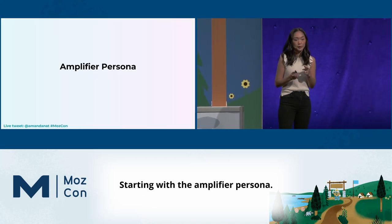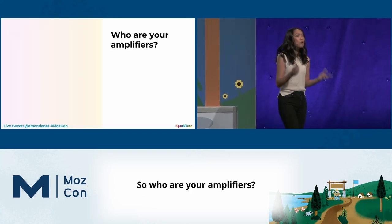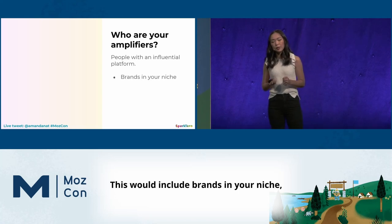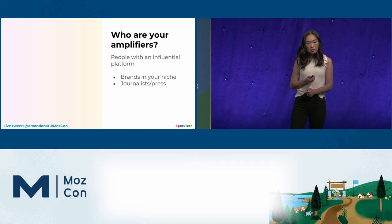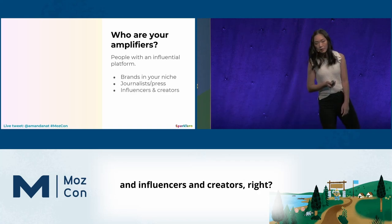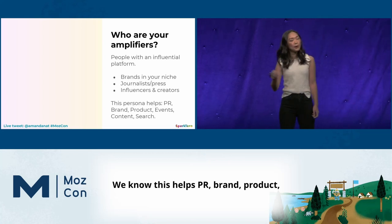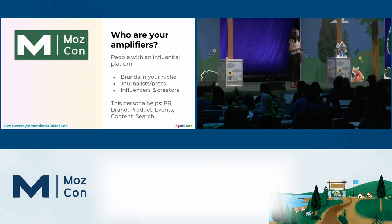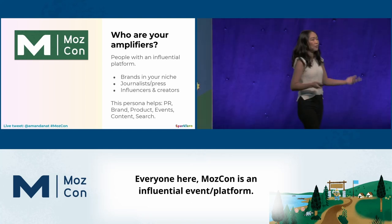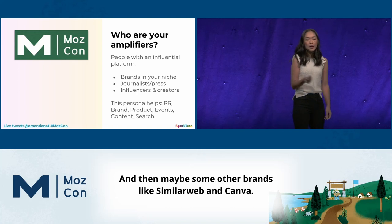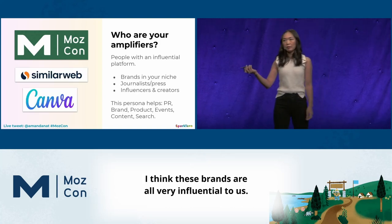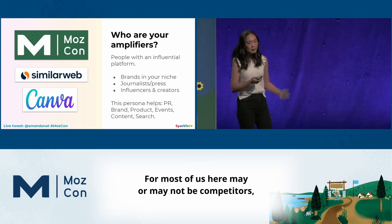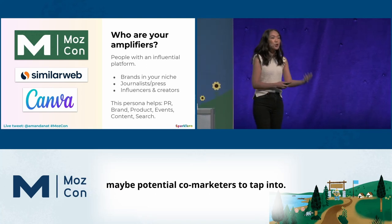Who are your amplifiers? Your amplifiers are people with an influential platform — brands in your niche, journalists, trade journalists and press, and influencers and creators. We know this helps PR, brand, product, events, content, and search. For those of us here, MozCon is an influential event and platform. Other brands like SimilarWeb and Canva are influential to most of us here — may or may not be competitors, but still potential amplifiers and co-marketers to tap into.